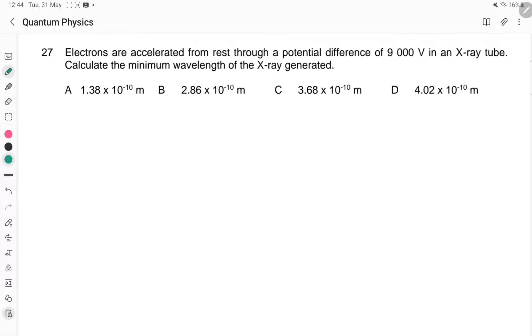In this question, we are told that the electrons are accelerated through 9,000 volts and we are supposed to find the minimum wavelength.